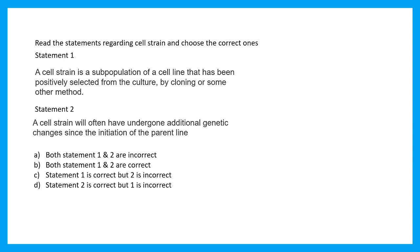The options are both statements are correct, both statements are incorrect, one is correct two is incorrect, one is incorrect two is correct. If you have chosen correctly and you know what cell strain is, the correct answer is both statement one and statement two are correct. If you need a quick reference to understand what is a cell strain versus cell line, you can quickly go to the link in the i button and click on that playlist.